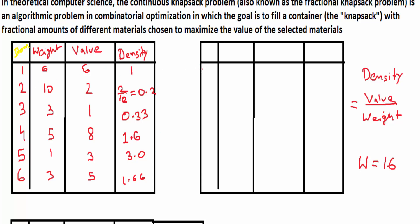we need to sort the items according to their density. We'll sort in descending order. The maximum density is for item number 5. We'll write 5, its corresponding weight and value and its density, that is 3.